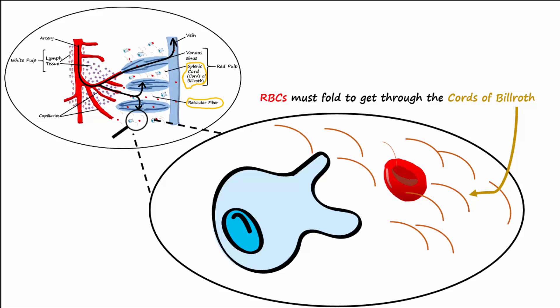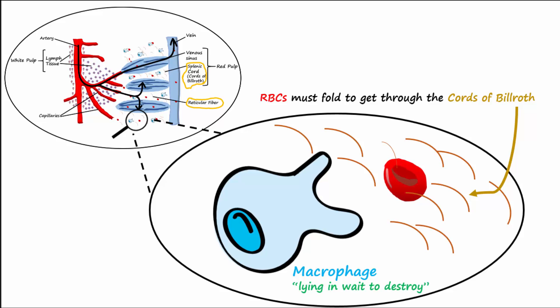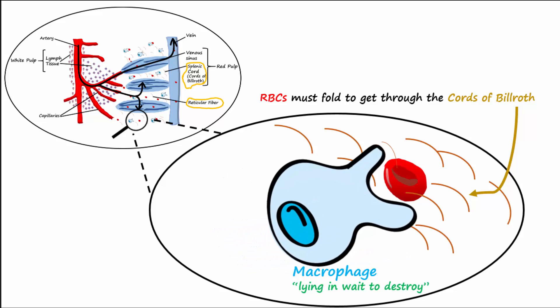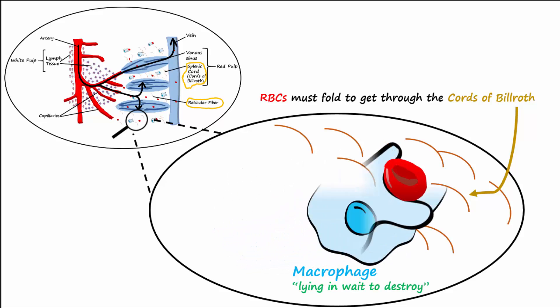Intermingled in the fibers, macrophages are lying in wait to destroy, and will phagocytose the old red blood cells.